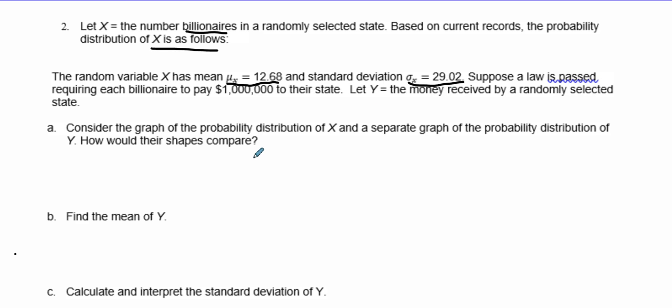The money received by a randomly selected state - how much are we going to receive? To figure out this new Y value, we take our X, the number of billionaires, and multiply by $1,000,000 since they're paying that amount to their state.